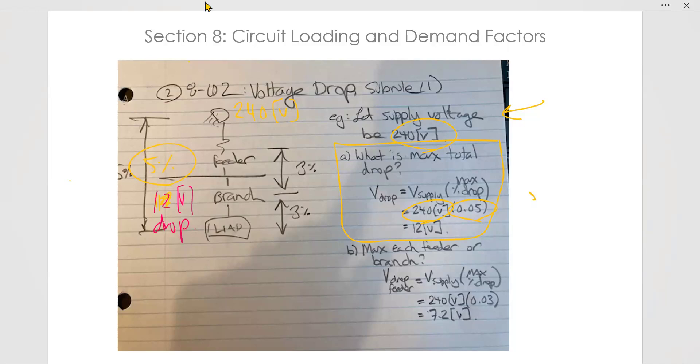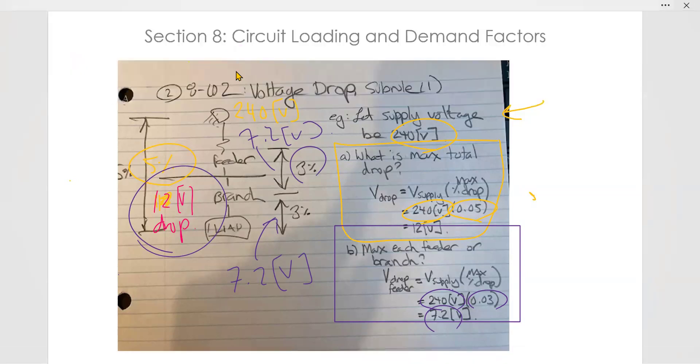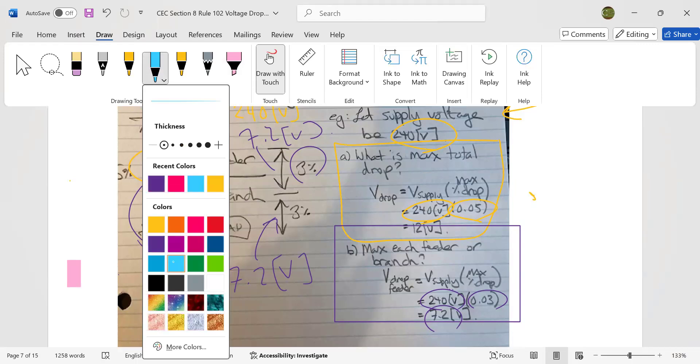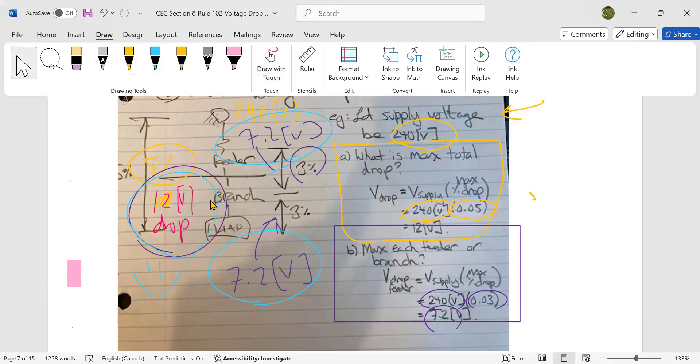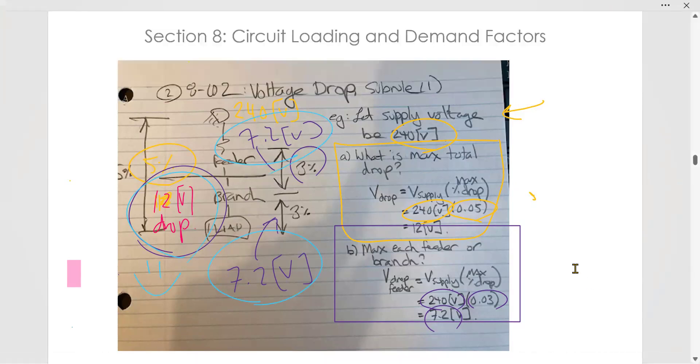I just calculated 5% of 240. And then what is the maximum each in each feeder or branch circuit? Well, then it is the supply voltage. Again, it's 240 times 3%, 240 times 3%. So that's 7.2. So this cannot drop more than 7.2 volts. And this cannot drop more than 7.2 volts. And you cannot drop more than 12 combined. So if this is going to drop 7.2, if we're going to drop 7.2 in the branch, then we cannot drop 7.2 in the feeder because it would be more than 12. So this has to be observed, the 12 voltage drop here. And that's how subsection 1 of rule 8.102 works. So a nice little example problem. Make sure that you understand that.